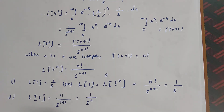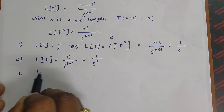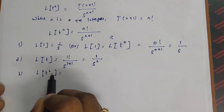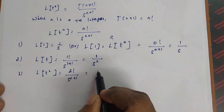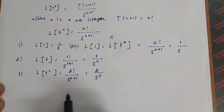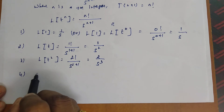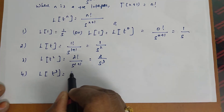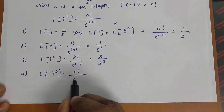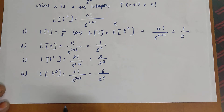The third example is L of t squared, meaning n equals 2: 2 factorial divided by s power 2 plus 1. Since 2 factorial equals 2, the answer is 2 divided by s power 3. The fourth example is L of t power 3, with n equal to 3: 3 factorial divided by s power 3 plus 1. Since 3 factorial equals 6, the answer is 6 by s power 4. Likewise we can evaluate L of t power n for any integer n.